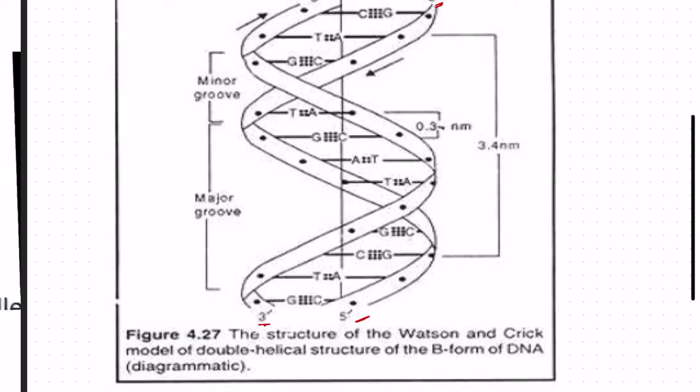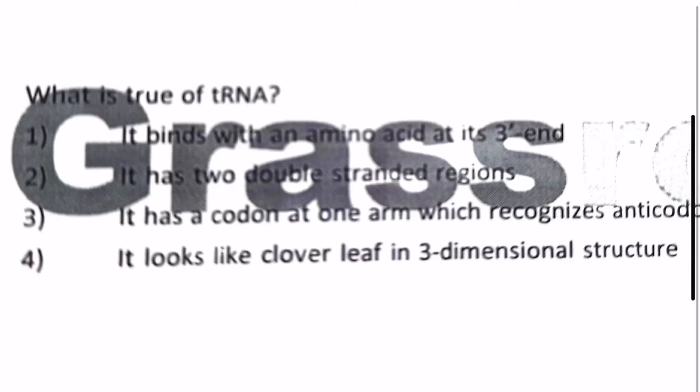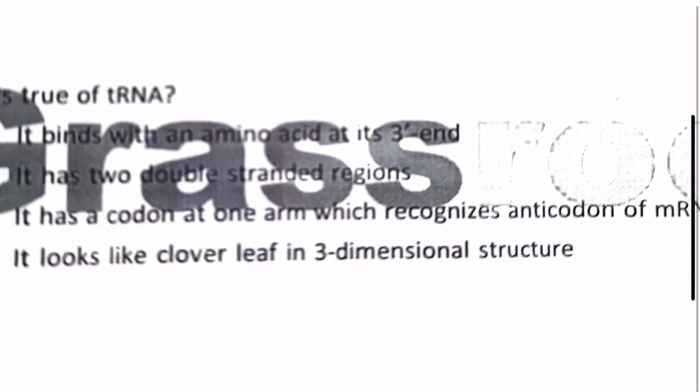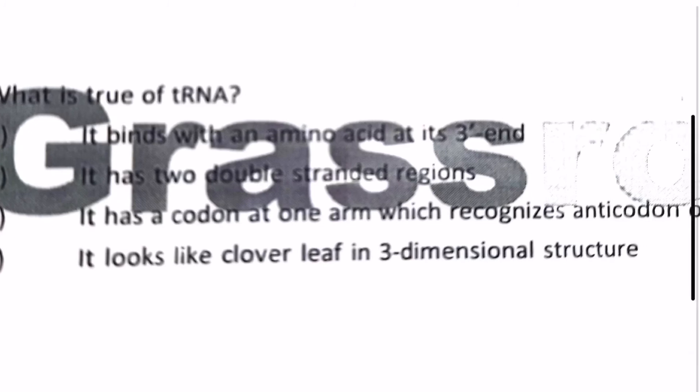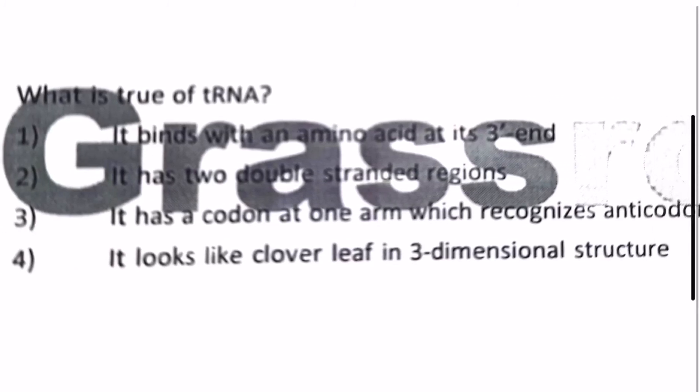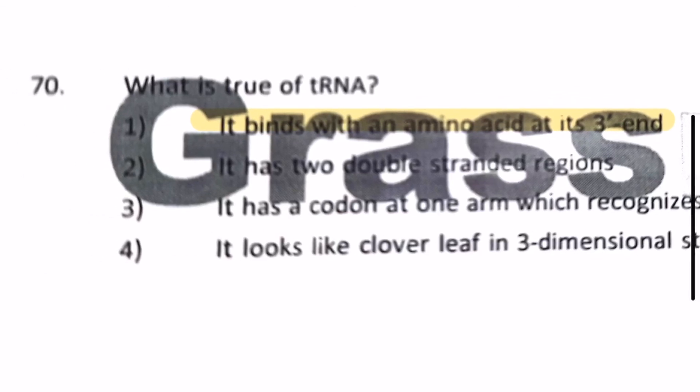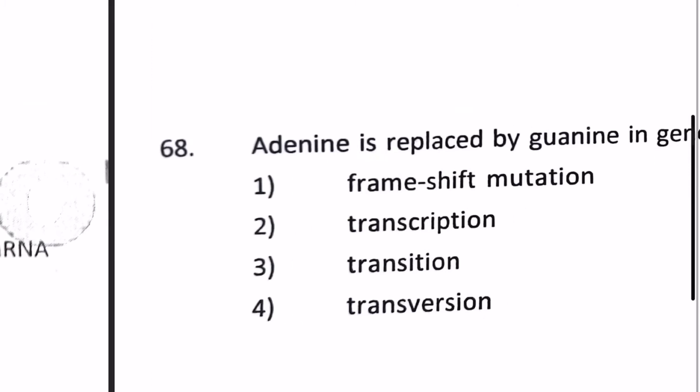Next question: what is true of tRNA? 1) It binds with an amino acid at its 3' end, 2) it has two double-stranded regions, 3) it has a codon at one arm which recognizes anticodon of mRNA, 4) it looks like clover leaf in three dimensional structure. Well the proper answer will be it binds with an amino acid at its 3' end.